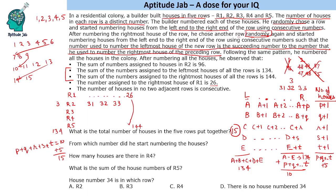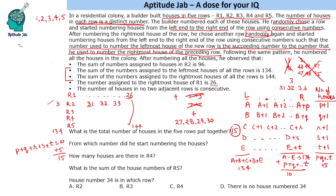Now, 26 ends R1 and 31 starts R2. We need to account for houses 27 to 30 — that's 4 houses. We can't split them as 1+3 (R2 already has 3) or 2+2 (distinct counts required). So there must be one row with exactly 4 houses numbered 27, 28, 29, 30. The remaining rows must have 1, 2, and 5 houses.